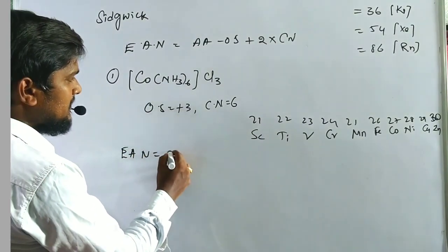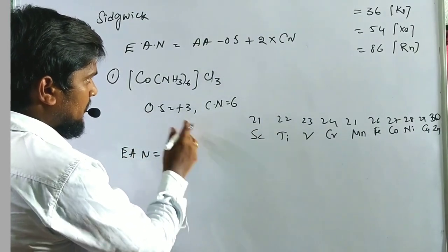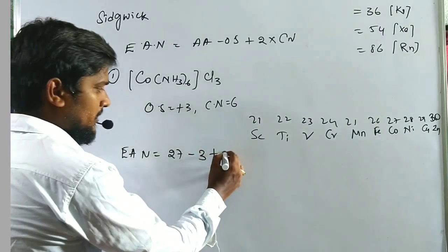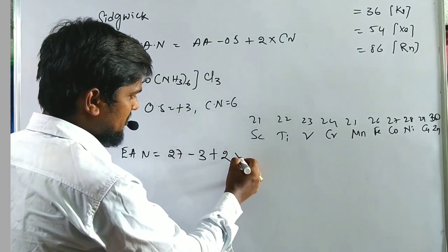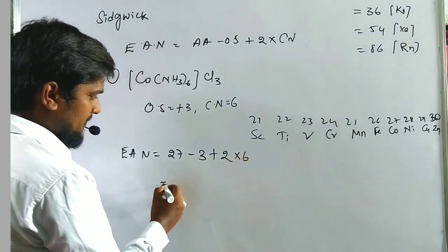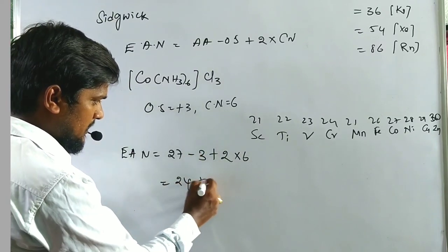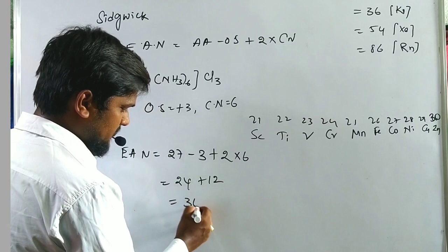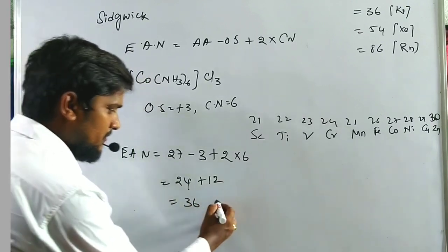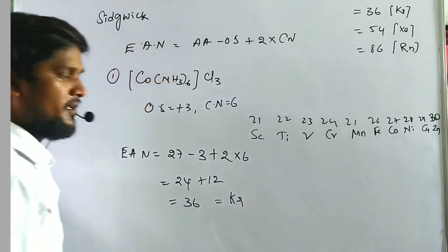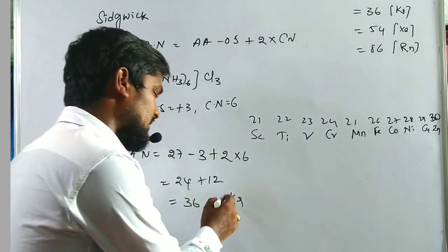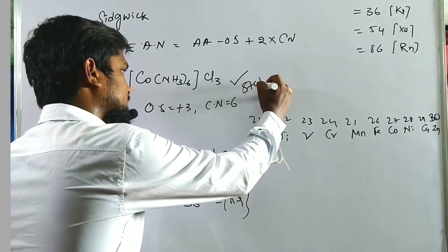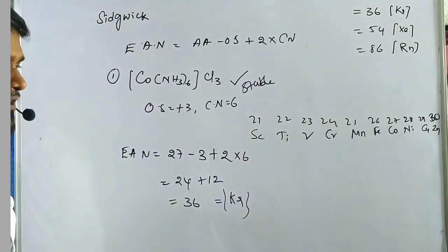The EAN calculation for [Co(NH3)6]Cl3: EAN = 27 − 3 + (2 × 6) = 24 + 12 = 36, which equals the next noble gas, krypton. Therefore, this complex is stable.